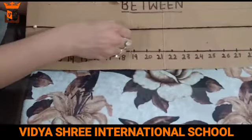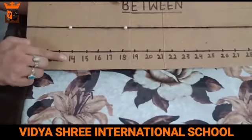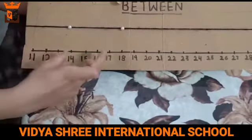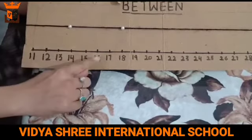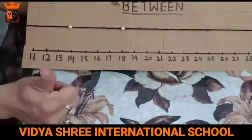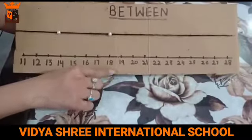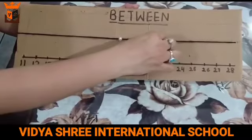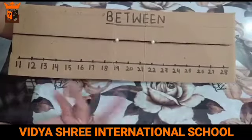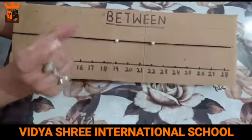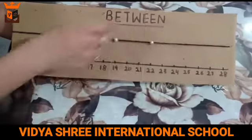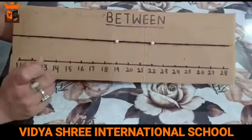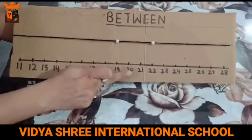Next I have placed the first bead on number 14 and the other bead on number 18. So which all numbers are coming in between these two numbers? That is 15, 16, and 17. Next, one bead is on number 19 and another bead on number 22. Which all numbers are coming in between? That is number 20 and number 21.